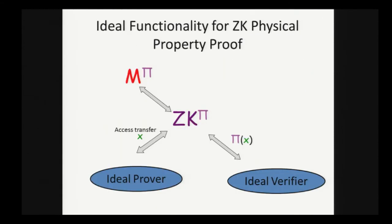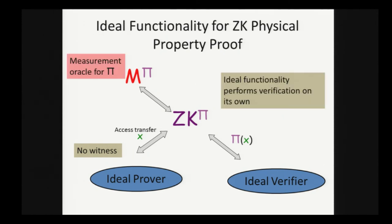A few words about the ideal functionality. There's actually no witness. The ideal prover is going to transfer access to the input object, the physical input, to the ideal functionality, who's going to perform the verification on its own by querying a measurement oracle for the property, and send the output to the ideal verifier. The full definition will also have to account for cheating.